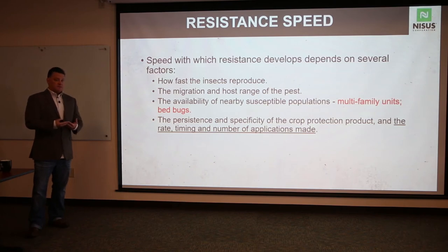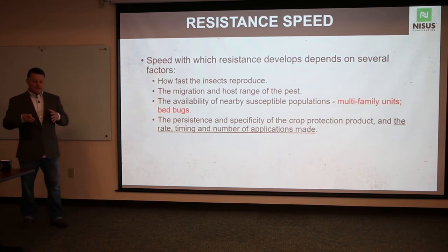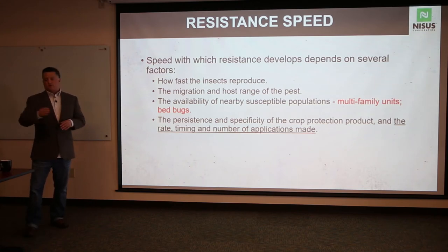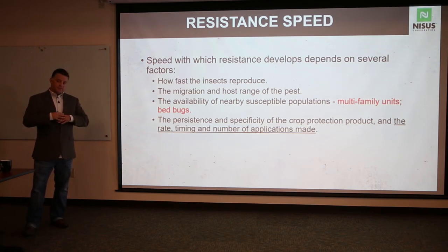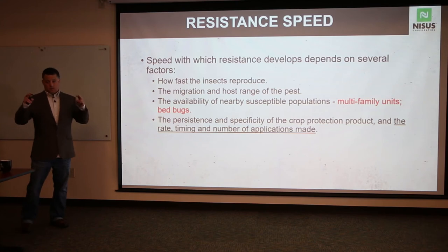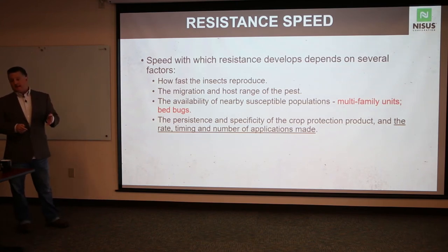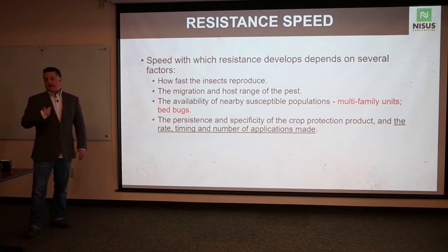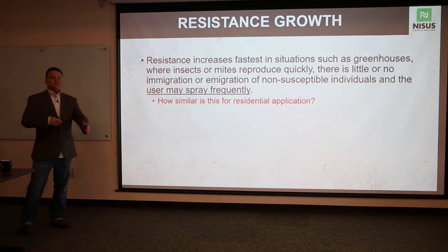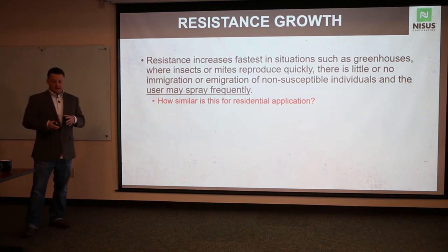The speed at which resistance develops depends on how fast the insect reproduces, the host range, and how susceptible individuals within the population are to insecticide applications. Bed bugs are a great example — they hide in the smallest cracks and crevices. If you spray for bed bugs and don't get into those small cracks and crevices, you'll have a complete failure and a callback. I consider that a form of resistance — not applying the proper technique to control the pest population.